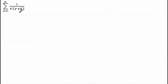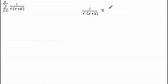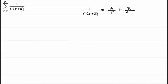Now if we've got a fraction like this that can be split into partial fractions, then we do that. I'm assuming you are familiar with partial fractions — if not, you can check out the tutorials on my website. What we have here are two linear factors, and we can say this is identical to a constant A over the first linear factor r, plus another constant B divided by the other linear factor r plus 2.